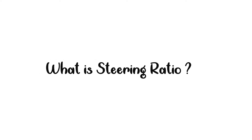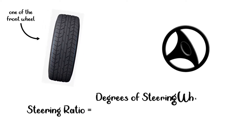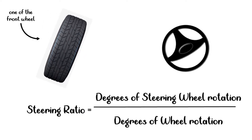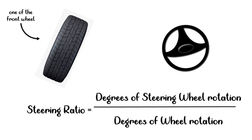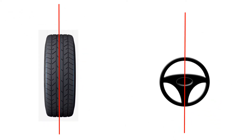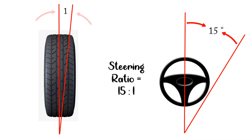What is steering ratio? Steering ratio is the ratio of degree of steering wheel rotation to wheel rotation. If the steering ratio is 15 to 1, then it means for every 15 degree turn of the steering wheel, the tire turns 1 degree.